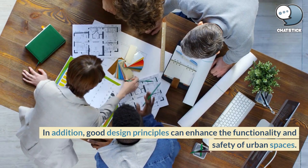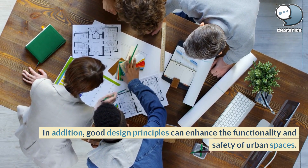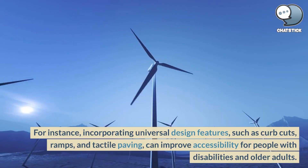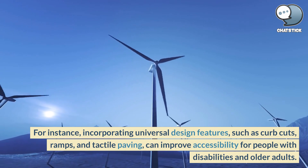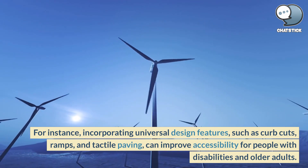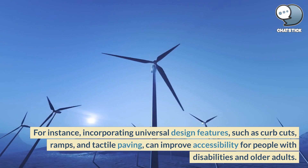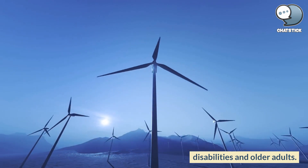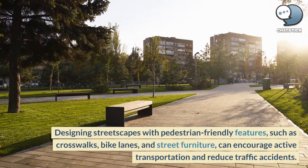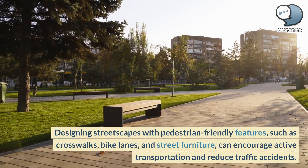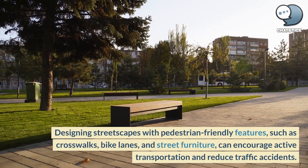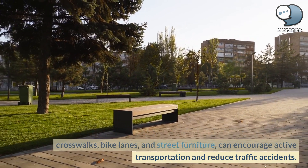In addition, good design principles can enhance the functionality and safety of urban spaces. For instance, incorporating universal design features, such as curb cuts, ramps, and tactile paving, can improve accessibility for people with disabilities and older adults. Designing streetscapes with pedestrian-friendly features, such as crosswalks, bike lanes, and street furniture, can encourage active transportation and reduce traffic accidents.